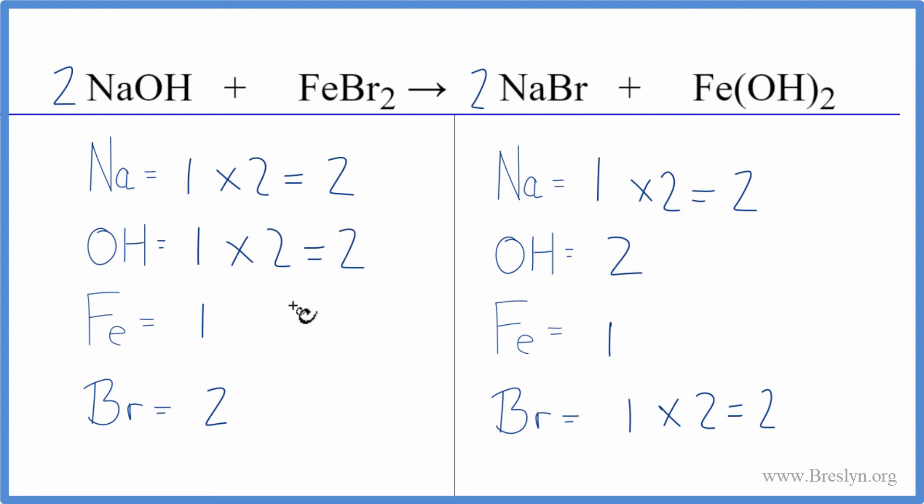So you can see it makes it a bit easier when we count the hydroxide, the OH, as one thing since it appears on both sides of the equation. On many double displacement reactions this will make it a lot easier. Here it helped just a little bit. This is Dr. B with the balanced equation for NaOH plus FeBr2. Thanks for watching.